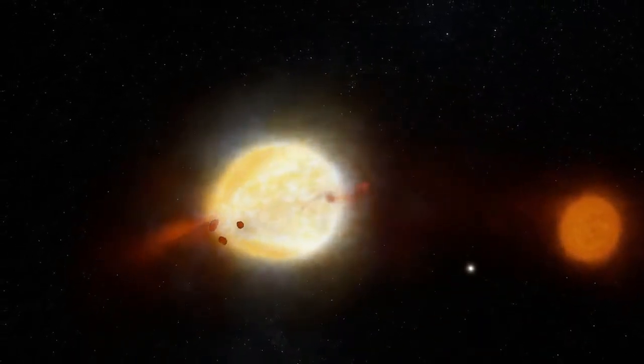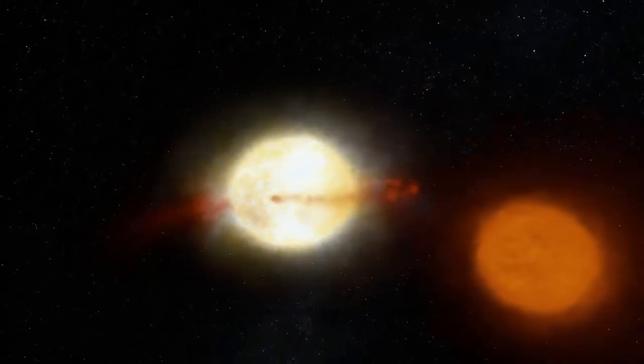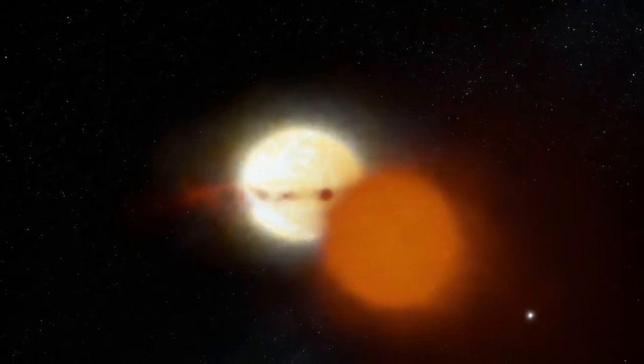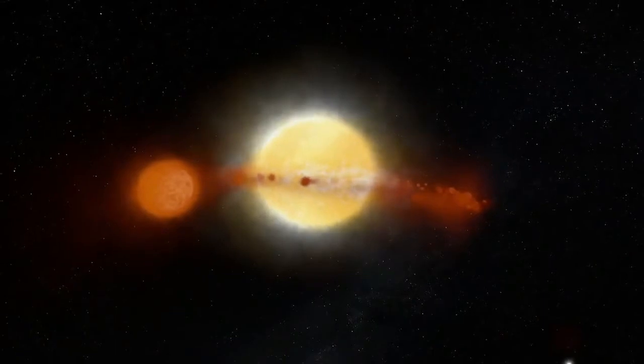The Earth would find itself enveloped by a thick atmosphere, but not like an atmosphere we know today. This would have been an atmosphere of vaporized rock with a temperature of more than 5,000 degrees.